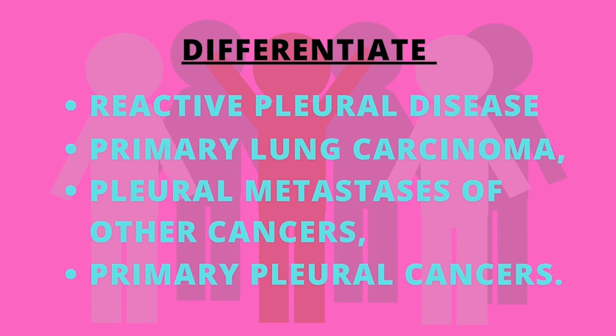Primary pericardial mesothelioma is often diagnosed after it has metastasized to lymph nodes of the lungs. Here, imaging comes into play.